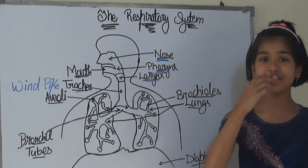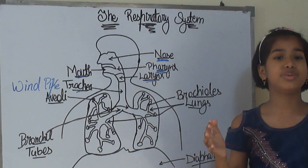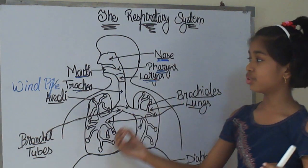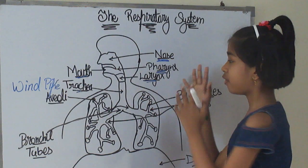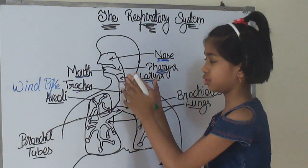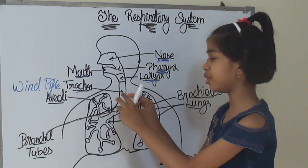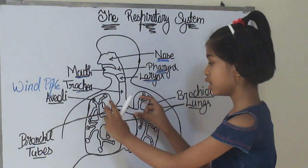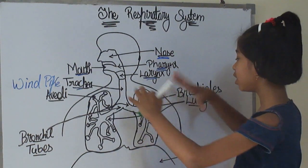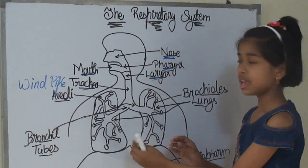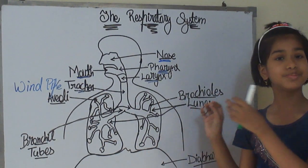When the air goes through the nostrils, it passes through the pharynx and then larynx, then goes to the trachea and then is separated into two lungs by the bronchial tubes. Then it travels through the bronchioles and ends up in the alveoli.